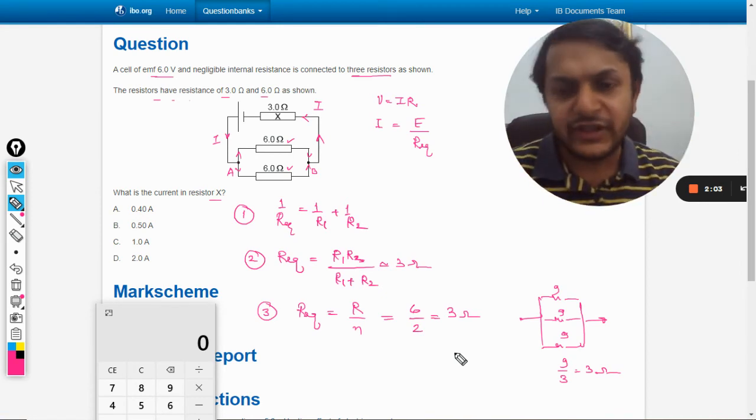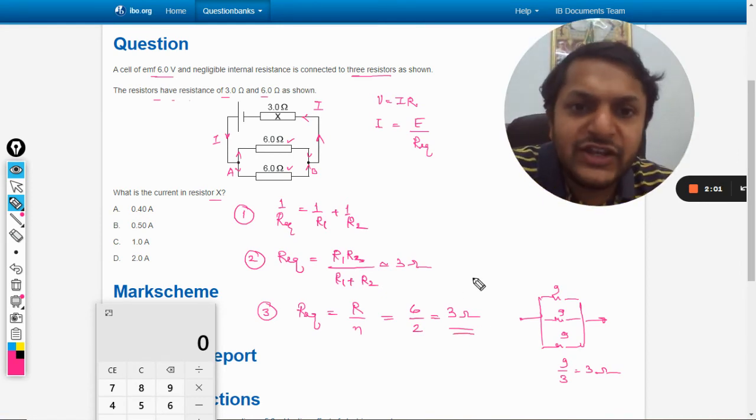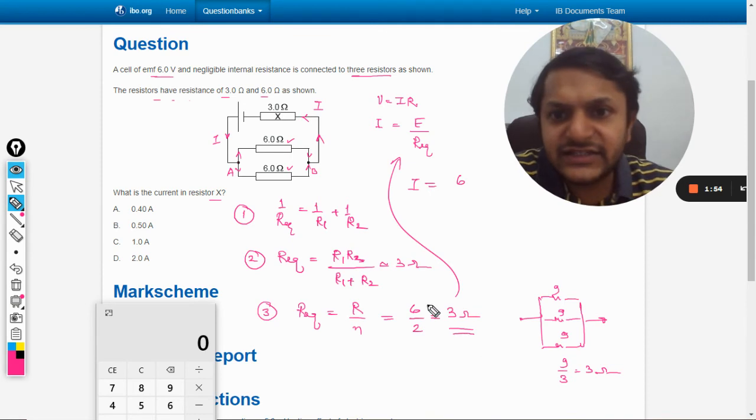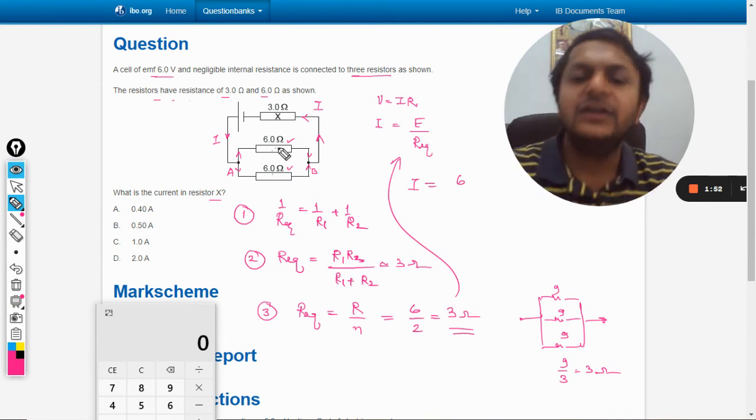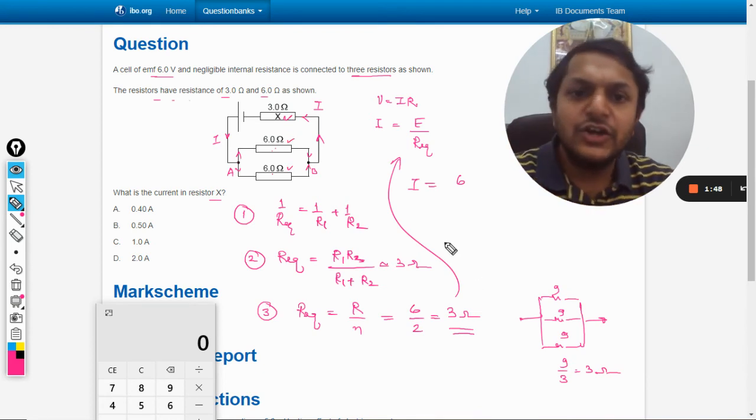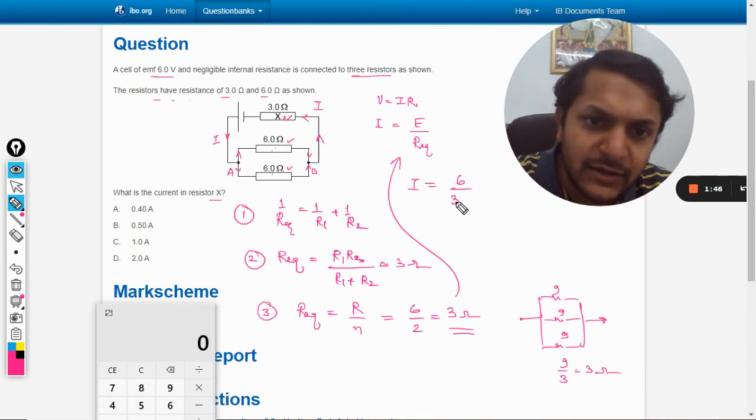You can use any of these three. So overall we have 3 ohms and now we will substitute this value here. Current is 6 ohm. Okay sorry, this 3 is the resultant of the parallel, then this 3 is in series with it. So your R equivalent will become 3 plus 3, so it will become 6 by 6. So your answer is 1 ampere.